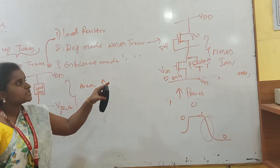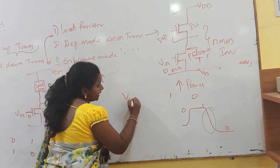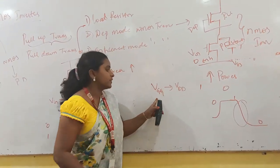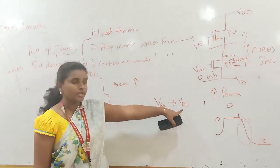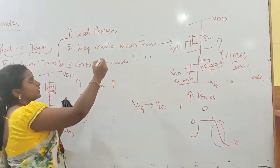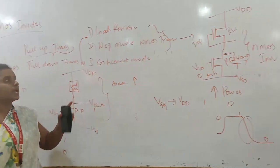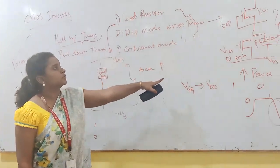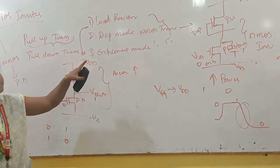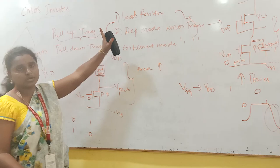For the third type, the pull-up transistor will be enhancement mode NMOS. For this arrangement also, it will be taking some extra time in order to transfer from the VGT value to the VDD. So these are all the different disadvantages of these three various pull-ups.